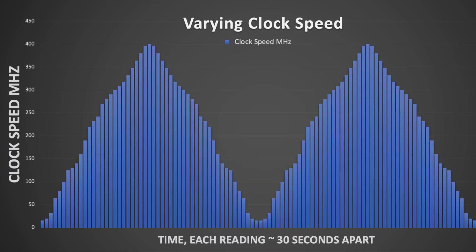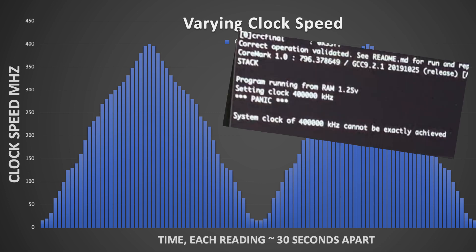Number two: can you implement dynamic clock speeds, speeding up and slowing down in a program? Yes you can. Here's the chart. I wrote a program which increases and decreases the clock speed and I ran this over about 30 minutes. The only thing you need to be careful of is to stay away from the absolute maximum clock speed possible with your Pico, because if the clock speed setting call fails in your program it'll panic and the Pico will either hang or reset itself.